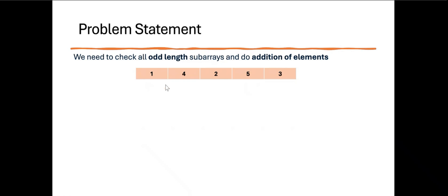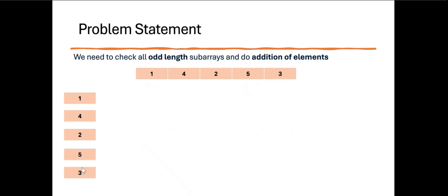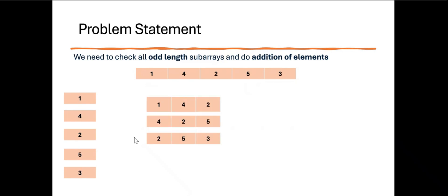Given this input array, for length 1 there are 5 subarrays — each element. For length 3, subarrays include 1, 4, 2 and 4, 2, 5 and 2, 5, 3 — you can see they are contiguous parts of the array.